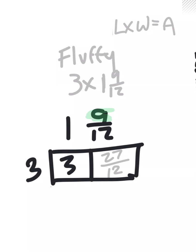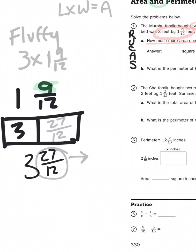If I add those two partial products together, I'm going to get an awkward number of 3 and 27 twelfths. Now, that can't stand. So I have to take 27 twelfths and see how many groups of 12 I can get out of it. So I'm going to divide 27 by 12.